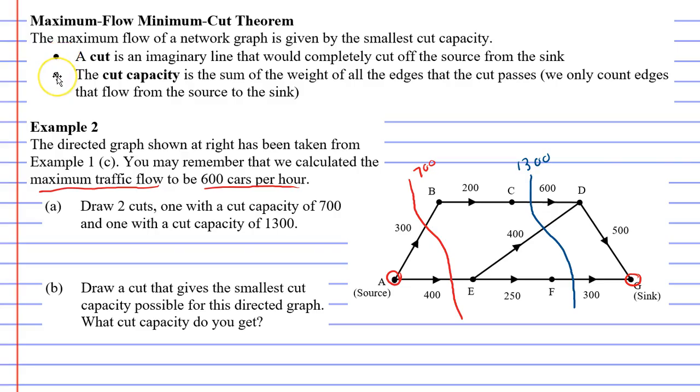Now it's important to look at dot point two, which says that the cut capacity is the sum of the weight of all the edges that the cut passes, which is exactly what I just said before. We add up the weight of each edge that the cut passes through. Now there is a clause, in brackets, which says we only count edges that flow from the source to the sink. So what does that mean? Well, let's go back to our diagrams where we had the cut on the left.